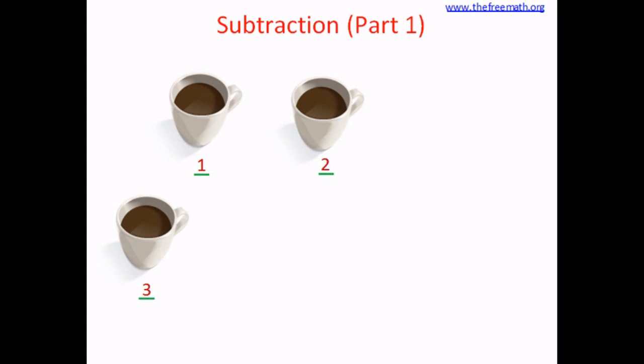Three cups are left. That means we subtract two from five and we get three. Let's write it down: five minus two equals three. We had five cups, we lost two cups, so now we have three cups. Five minus two equals three.